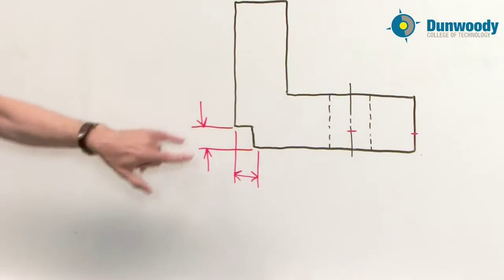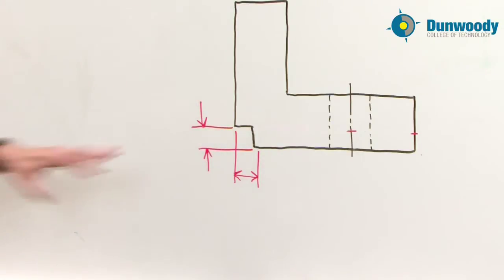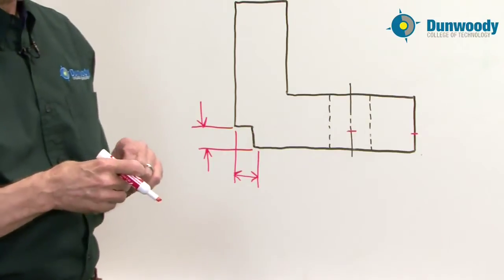So now I have two dimensions that are necessary and they're both close to the actual feature. So if this part's being machined, the machinist has both dimensions right next to each other, it's much easier to read that print.